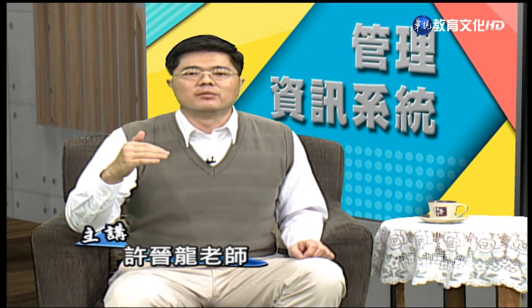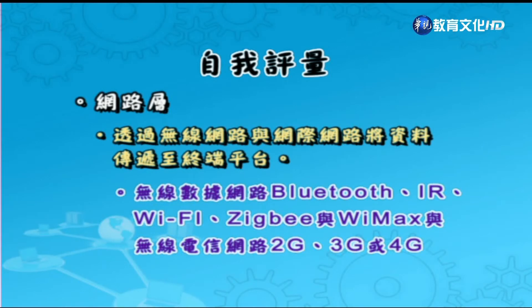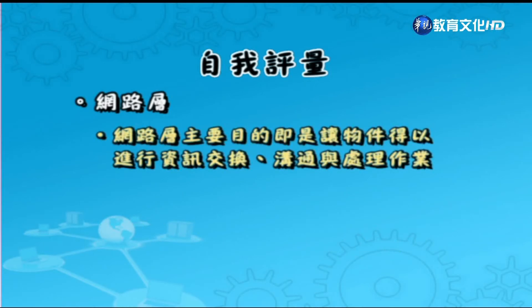第二種是網路層。網路層是透過無線網路（像藍牙、紅外線、Wi-Fi、Zigbee、3G、4G）或網際網路將資料傳遞到終端平台。網路層主要目的是讓物件得以進行資料交換、溝通與處理的作業。